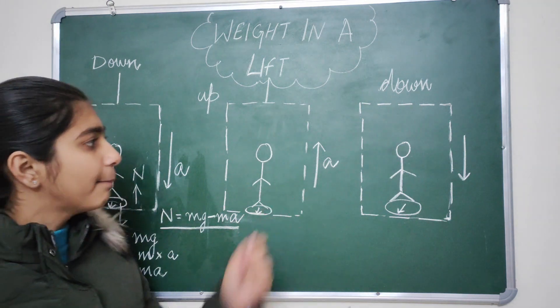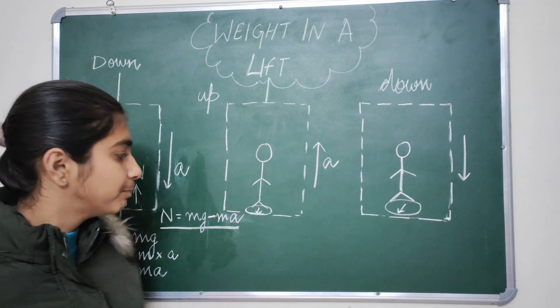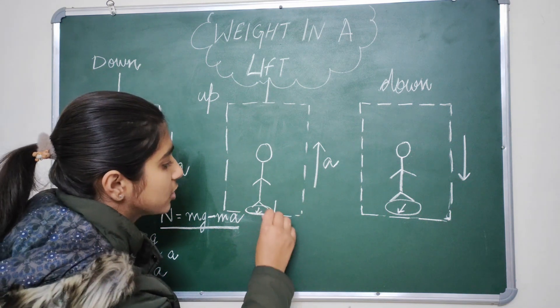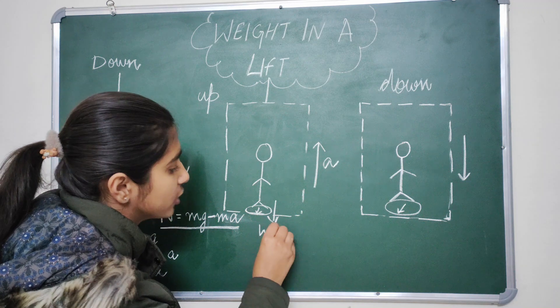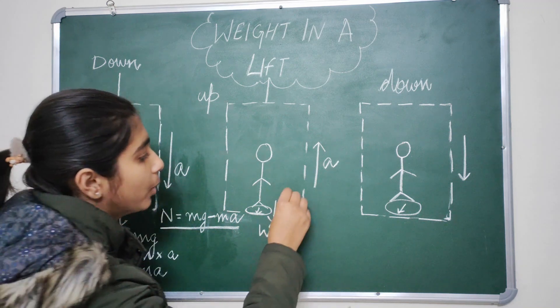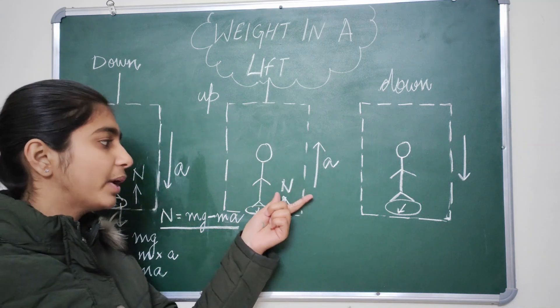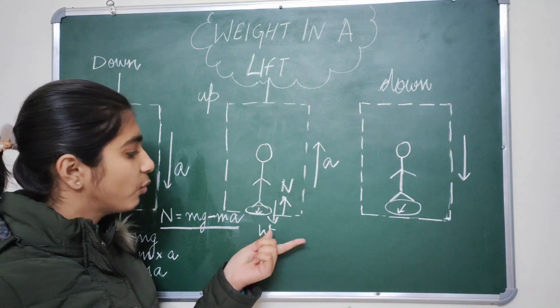Let's see what happens when the lift goes up. As the lift goes up, the same case happens. We exert a force or a weight in the downward direction and also the normal reaction in the opposite direction, which is numerically in magnitude equal to the weight of this body.